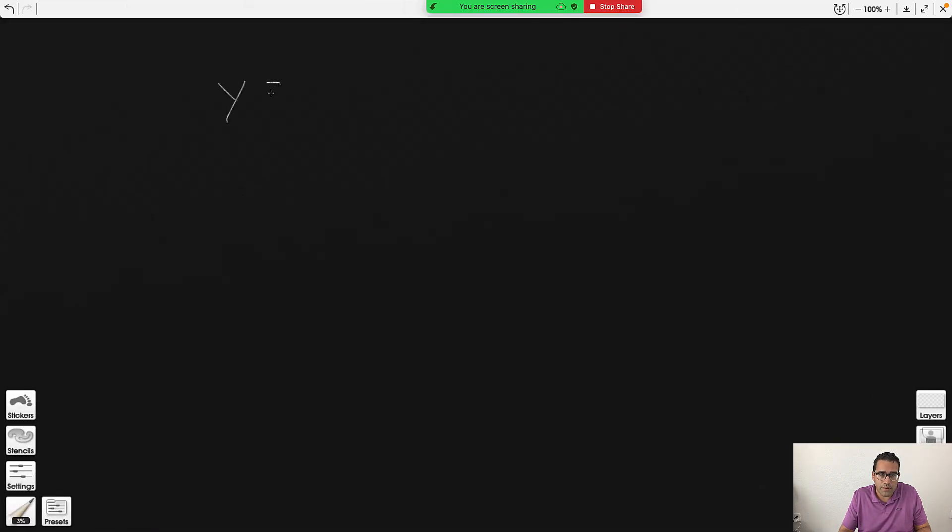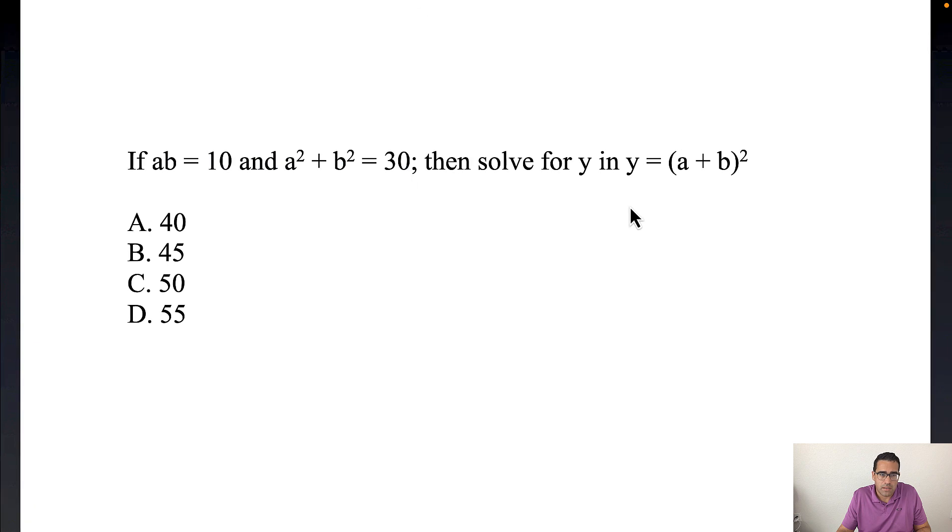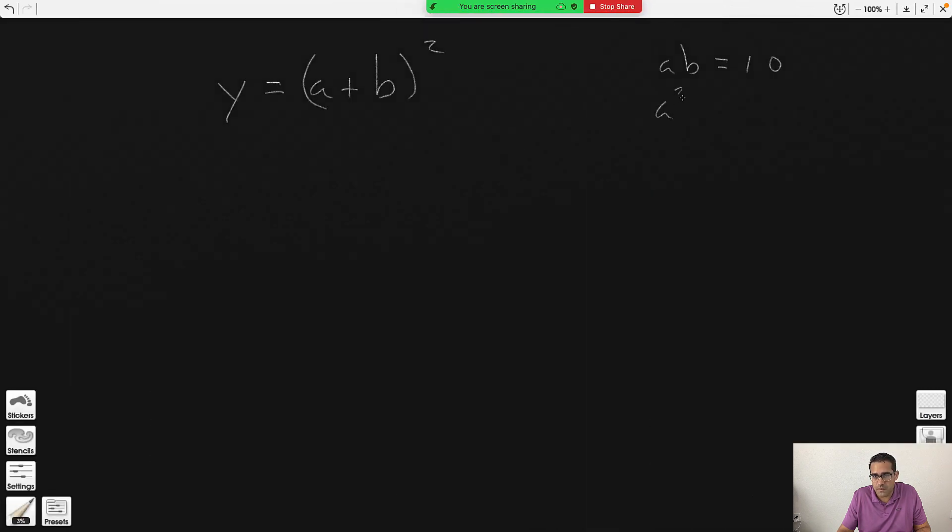I've never seen that per se, but let's see how it's done. Step one: they're giving you this, and they're also telling you that ab equals 10 and a exponent 2 plus b exponent 2 equals 30, and they want to find the value of y.